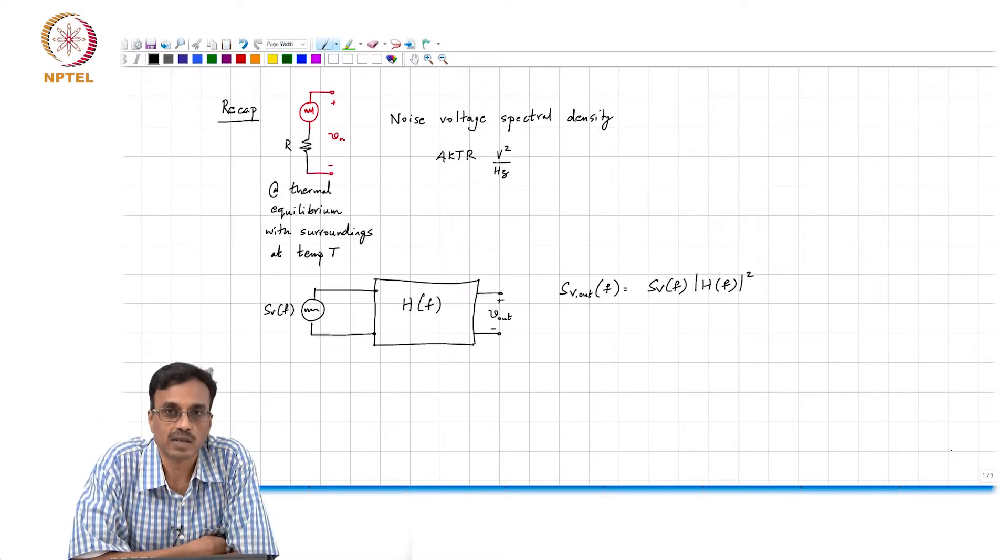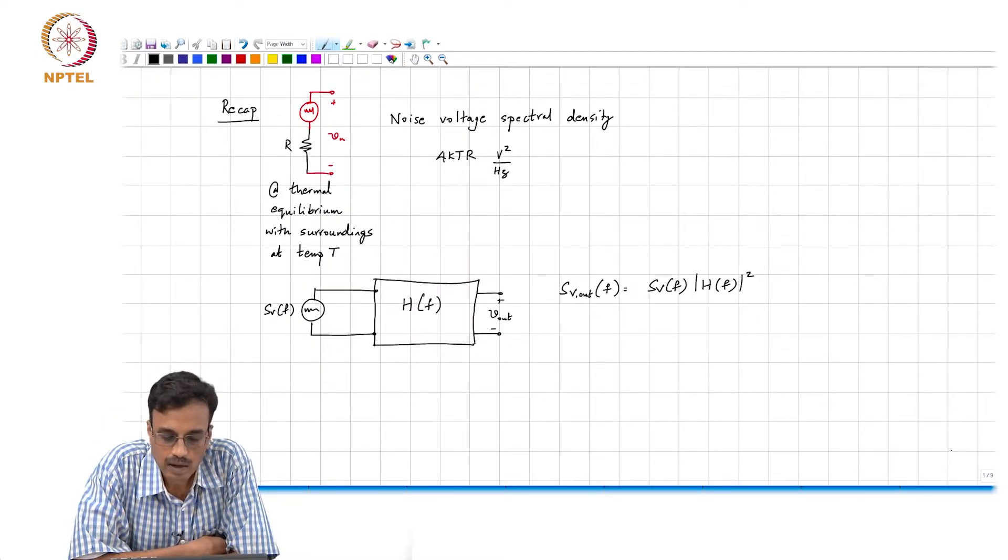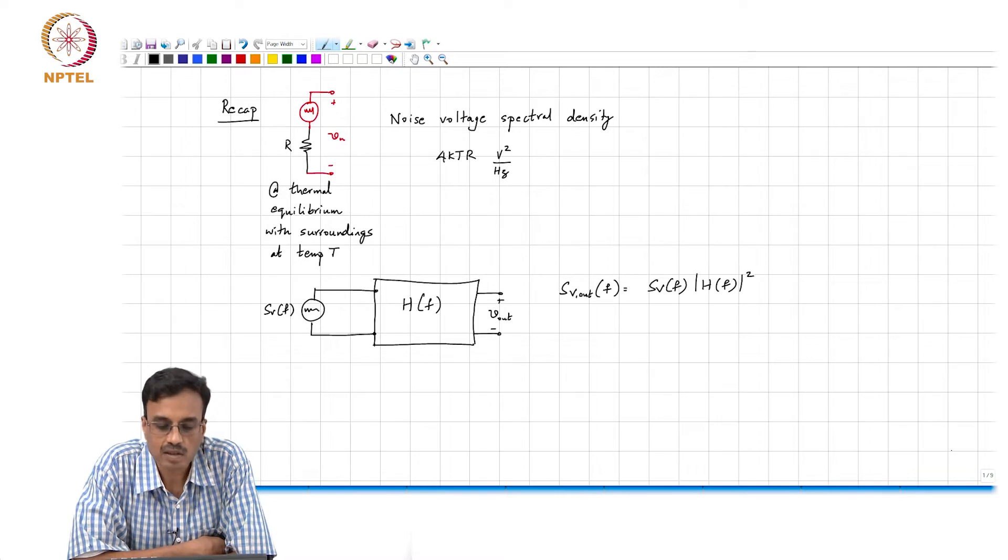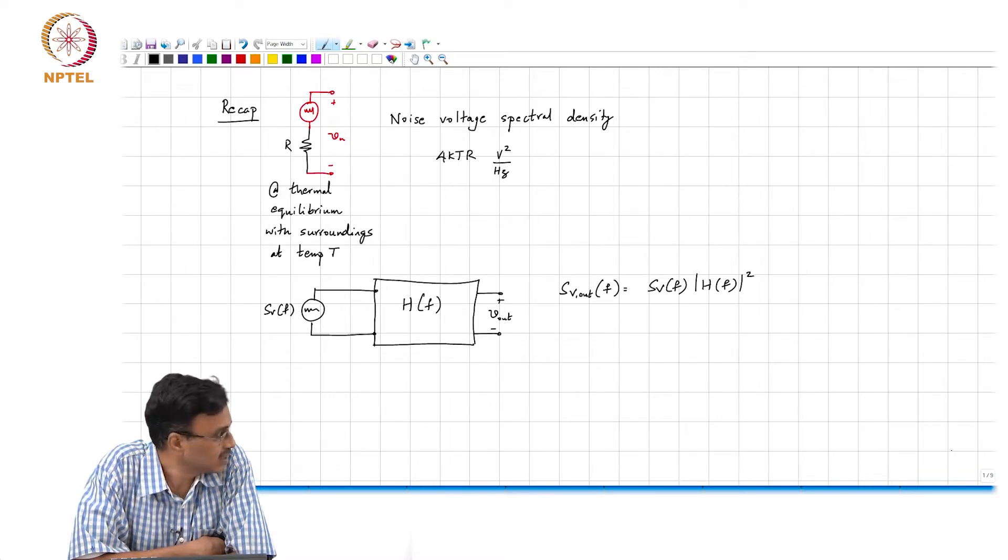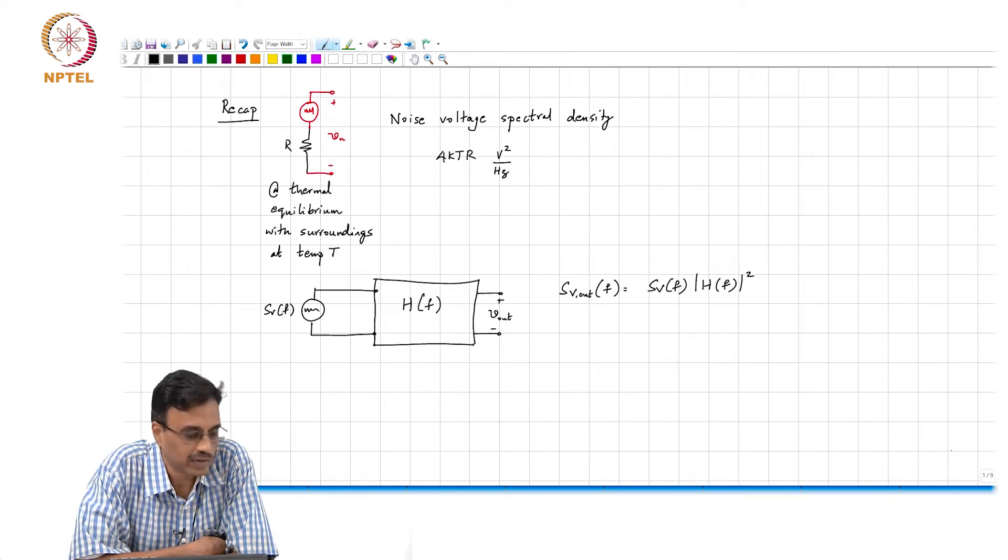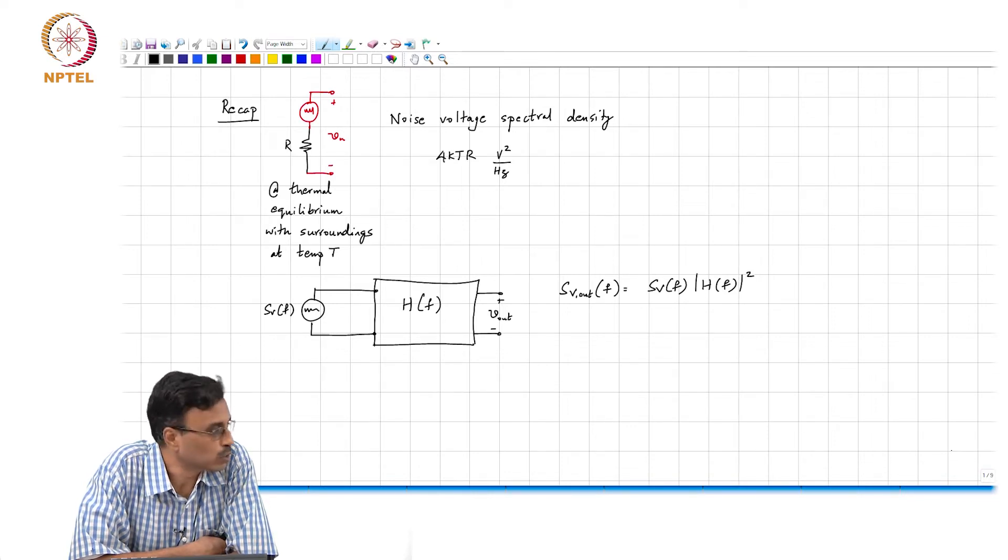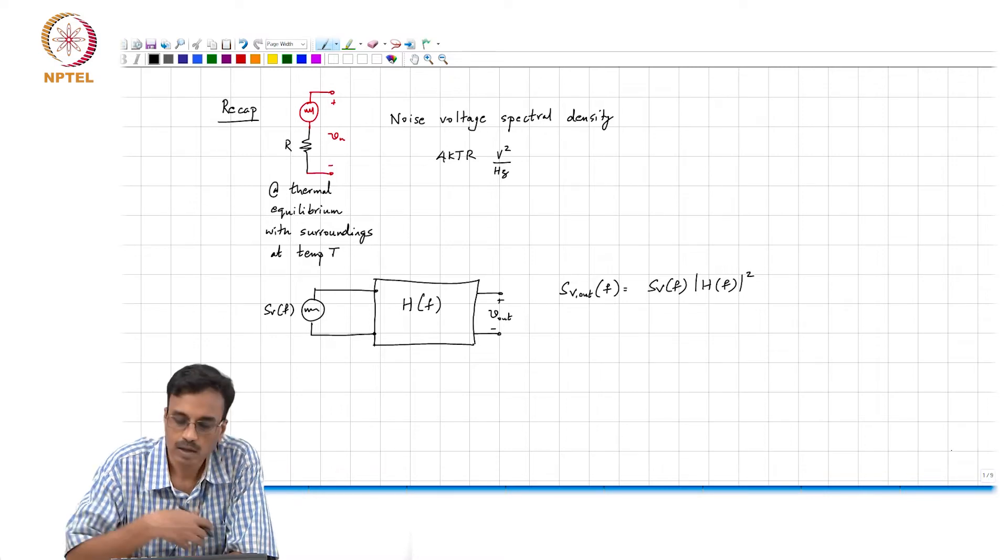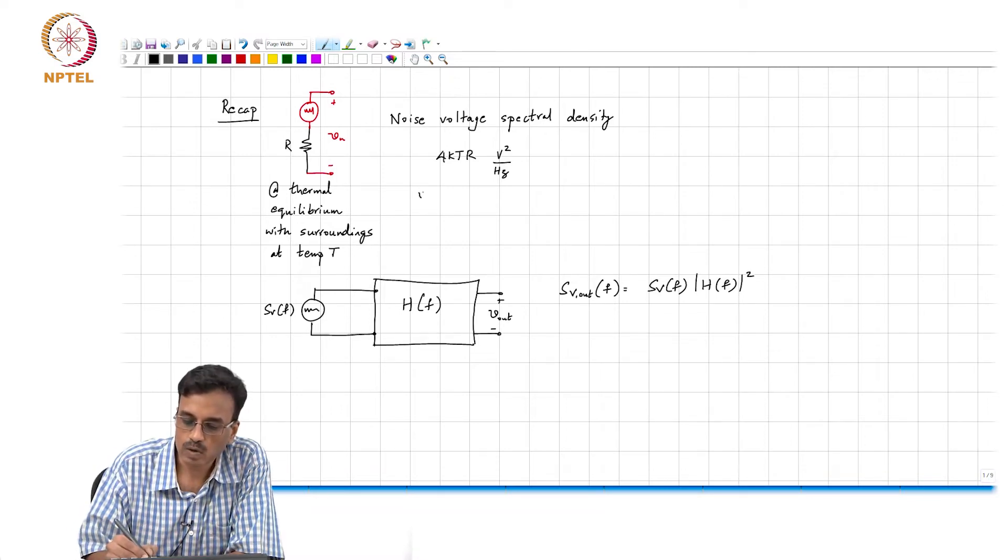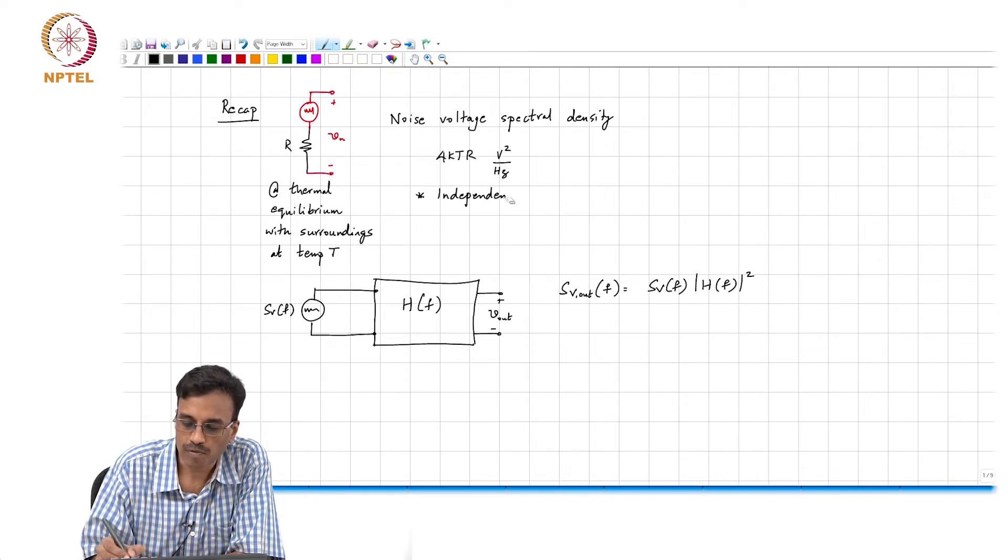In the last class we started discussing about noise and here is a quick summary of what we learned. Every resistor in thermal equilibrium with surroundings at an absolute temperature T is associated with a noise voltage source in series with it, and the noise voltage spectral density corresponding to this noise source is 4kTR volt square per hertz. As we discussed last time, this spectral density is independent of frequency.